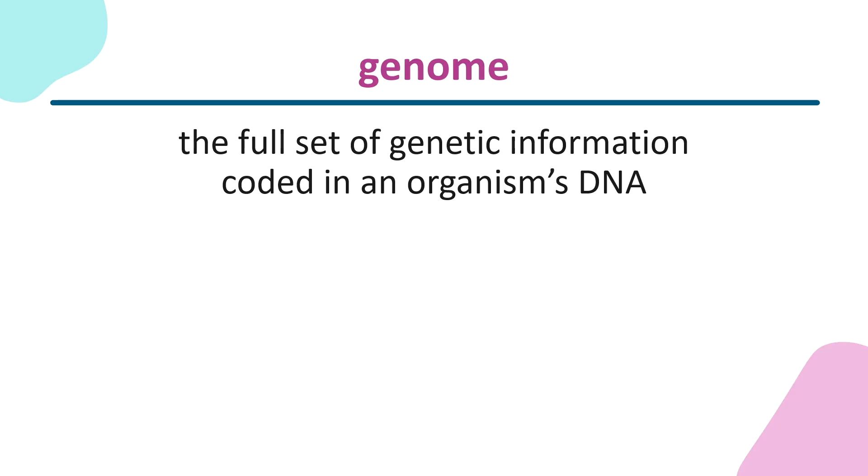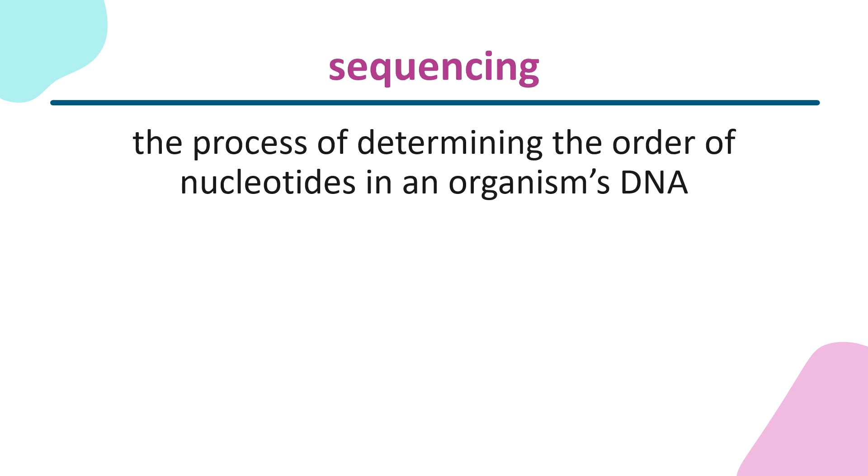But what exactly do we mean when we talk about genome sequencing? A genome is the full set of genetic information coded in an organism's DNA, and sequencing is the process of determining the order of nucleotides in an organism's DNA. The work of separating, cataloguing, and rearranging genes are all part of the field of genomics — the study of genomes. Scientists have studied the genomes of a variety of organisms, ranging from the almost 5 million base pairs in E. coli to the 3.1 billion base pairs in human DNA.